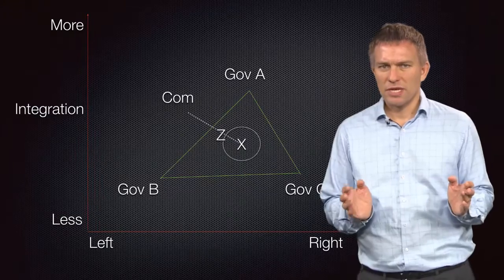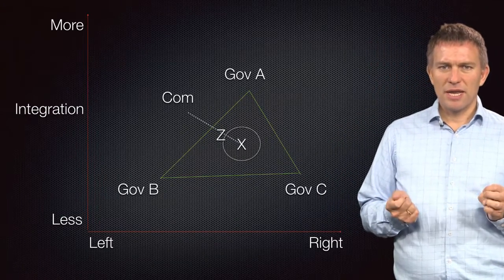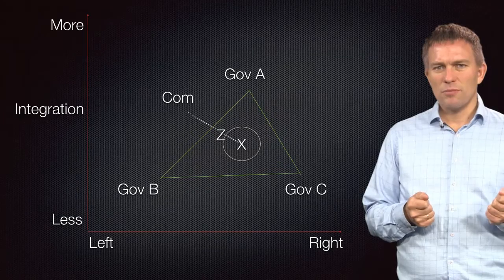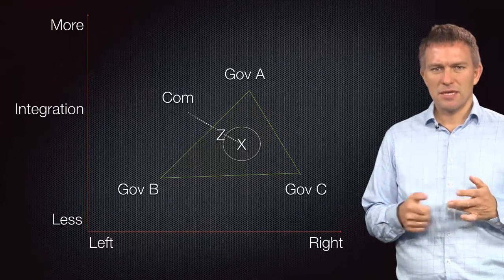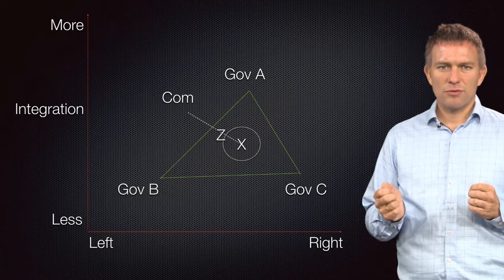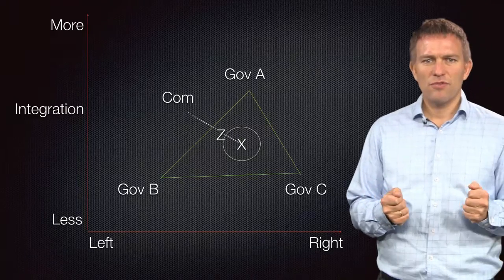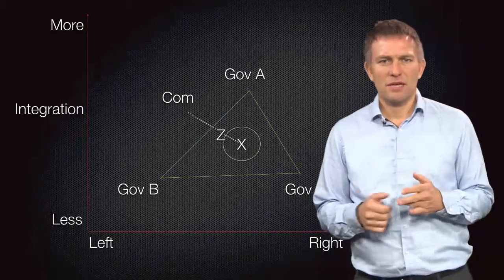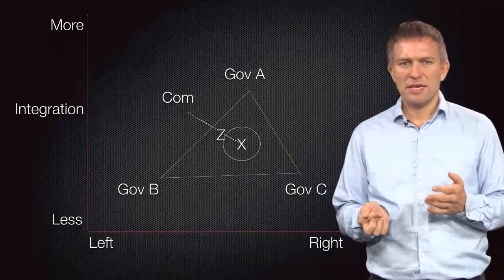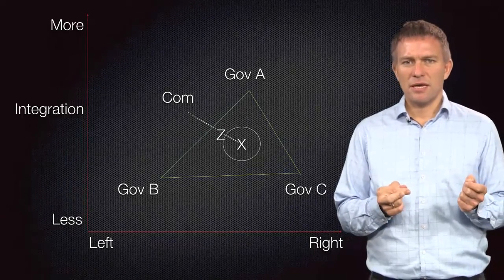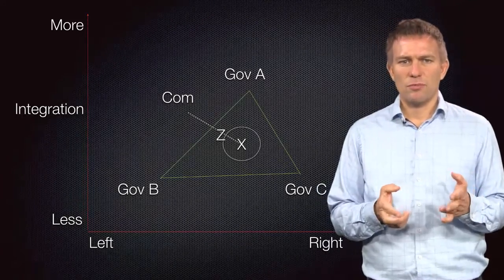It is further to the left than Government A would prefer, but it is more integrationist than X. And although it is more integrationist than Government B would prefer, it is more leftist than X. And finally, for Government C, it is better than the resulting policy that would have happened if there were no control in place.